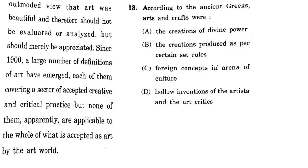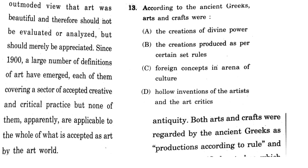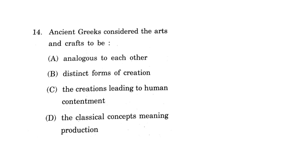The 13th question for this passage was: according to the ancient Greeks, what were arts and crafts? If you read the first paragraph of the passage, it shows there were certain sets of rules. The excerpt from the passage states: 'Both arts and crafts were regarded by ancient Greeks as a production according to rules.' So there were certain sets of rules for arts and craft production. The correct answer here is B: the creation produced as per certain sets of rules. I hope you answered it correctly.